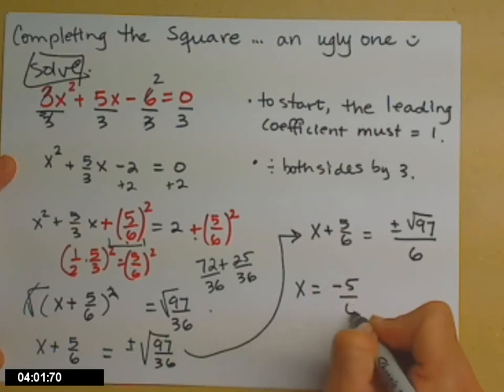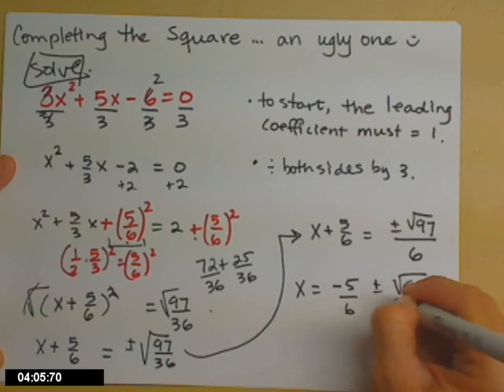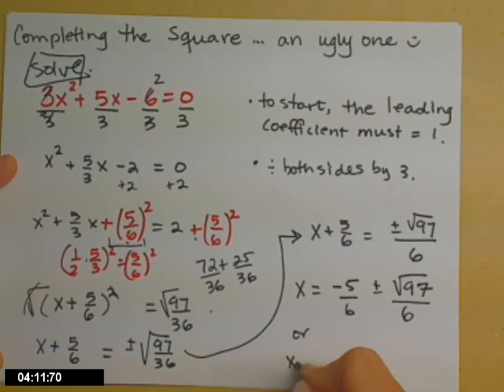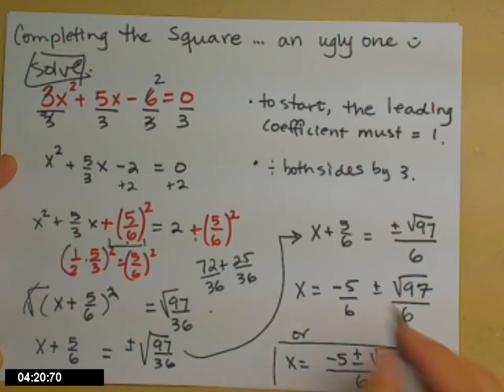So negative 5 over 6 plus or minus the square root of 97 over 6. Notice my 6 didn't sneak under that radical. Don't let it under. Or you might write that negative 5 plus or minus square root of 97 over 6, since they have the same denominator. Either one of those is an appropriate answer.